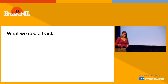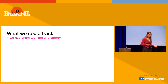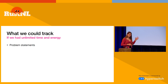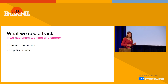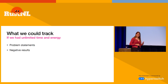So let's take a look at what we could track — at least if we had unlimited time and energy. The most obvious thing we could start tracking is the problems themselves, instead of just having an overview of solutions. We could also start tracking negative results, because something that happens to me a lot is that I think I have some brilliant idea, I work on it for weeks or months, and then in the end I realize it doesn't work and throw everything away. That feels like a failure and a waste of time.